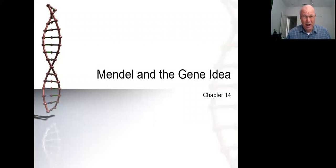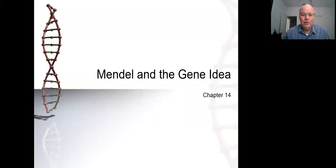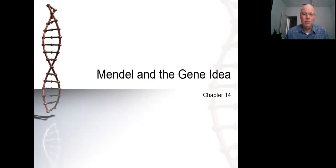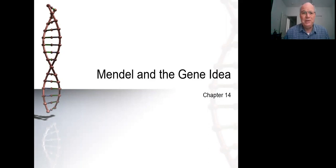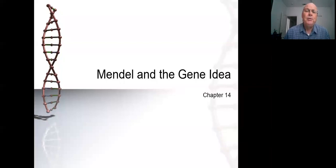In 1865 and 1866, Mendel gave a couple of talks and published papers — one in German, with an English translation also published. But by and large, the work was ignored. Darwin was likely aware of what Mendel had done, but people never really fully understood what he was talking about or recognized its significance. It would not be until 1901 — about 25 years after Mendel died — that people suddenly recognized just what Mendel had been saying and how significant it was to our understanding of inheritance.